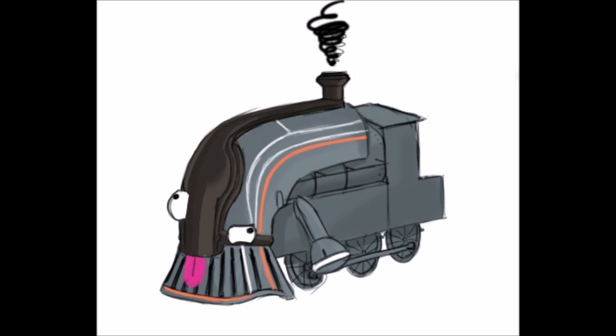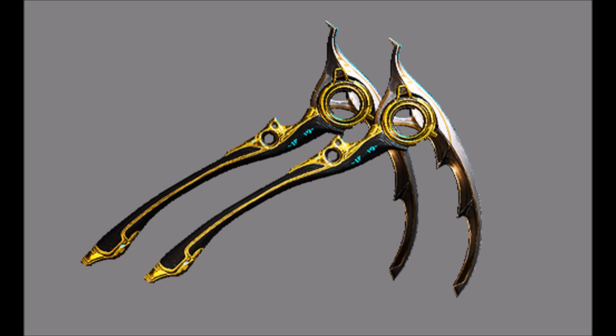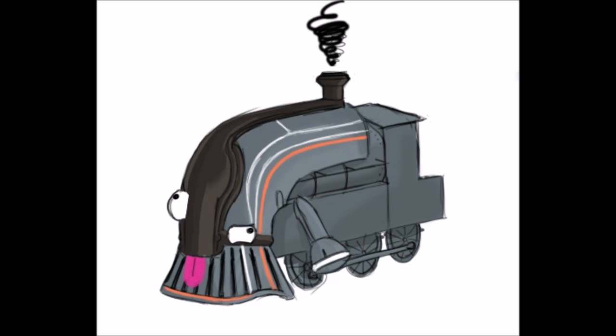This means that if Infuse is applied onto a high attack speed melee weapon, such as the dual kamas prime, you'll be making the most out of the buff. This doesn't even include other possible sources of attack speed buffs like Valkyr's Warcry or the Berserker mod, which would basically turn any high attack speed melee weapon into a ragdoll machine.